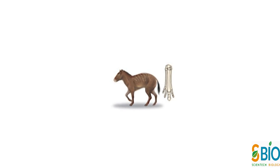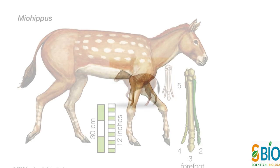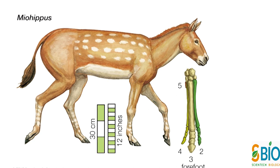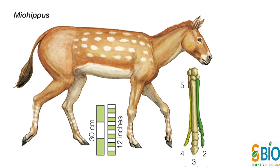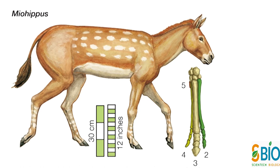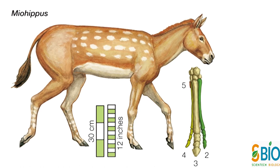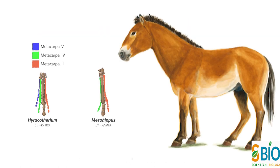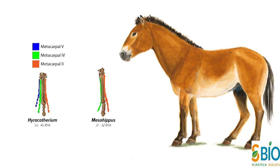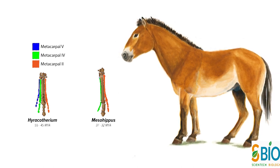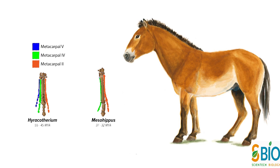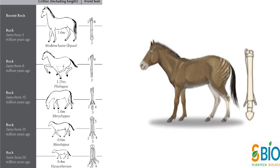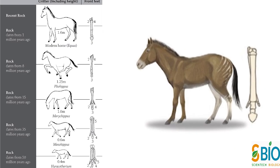इसके बाद Mesohippus लगभग 3 करोड़ साल पहले Oligocene के दौरान Hyracotherium यानि कि Eohippus से Evolve हुआ था। Mesohippus का आकार Modern Sheep के जैसा था। इसके सभी Limbs में 3 Digits थे, Limbs के Middle Digit दूसरों के तुलना में बड़े होते थे, और इसके साथ इनके Molar Teeth में कुछ Serration होते थे।